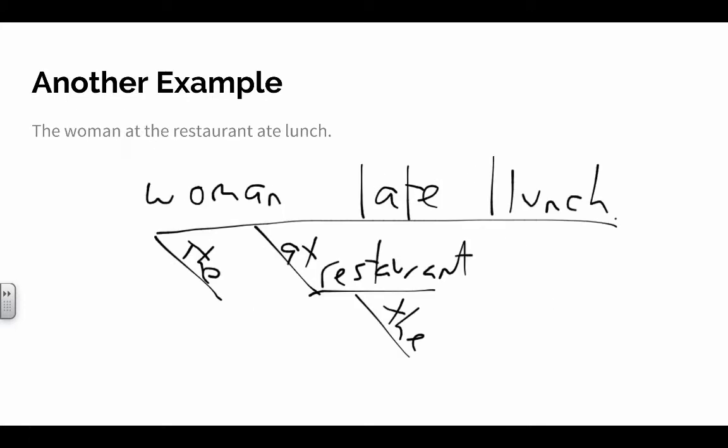So, another example, the woman at the restaurant ate lunch. So right here, woman is the subject, so she's over here. Ate is the verb, is here. Lunch is the direct object over there.